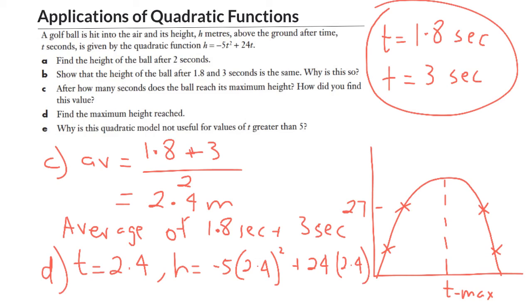We're expecting a number bigger than 27 because we know, if we think about it, our ball gets to 27 meters and it's still going up. And then it comes back down and it gets back to 27 meters. We're expecting something a little bit bigger than 27 meters. And we end up with h equals 28.8 meters.